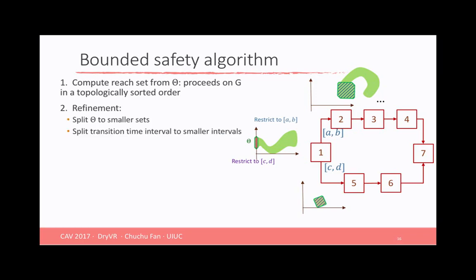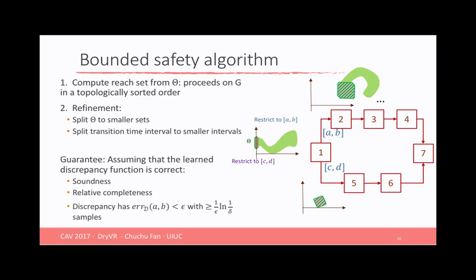So the refinement is not going to only refine the initial set, that is going to split the initial set to smaller sets, we are also going to split the transition time interval to smaller intervals. We have proved that if the learned discrepancy function is correct, then this algorithm is sound and relatively complete. So we recall that the discrepancy function will have error decrease with more and more number of samples. But of course, it's going to take more time. And empirical results showed with very small amount of training trajectories, we can get very high accurate learned discrepancy function.